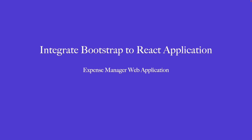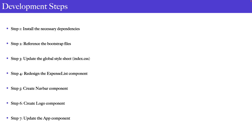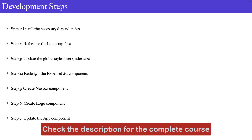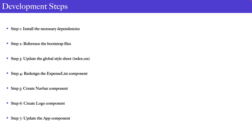In this video, let's discuss the development steps for integrating Bootstrap into a React application. The steps are: first, install the necessary dependencies; second, reference the Bootstrap files; third, update the global stylesheet (index.css); fourth, redesign the expense list component; fifth, create the navbar component for menu items; sixth, create the logo component; seventh, update the app component; and eighth, test the application. Let's discuss these steps one by one in detail.